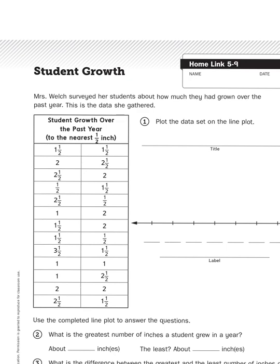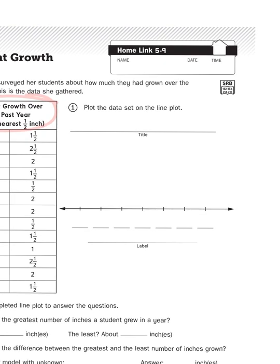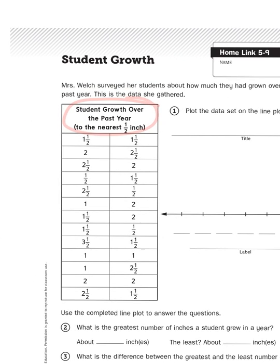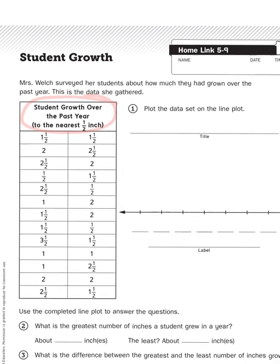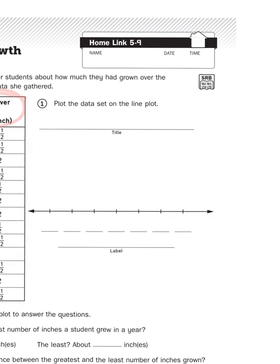So as you can see, at the top left-hand corner, we have a chart, and there are a number of measurements. Now, over to the right, we have a space to create a line plot graph. So, first of all, we need to give this a title. What should we call this? Well, she measured growth over the past year. So we could say something like this.